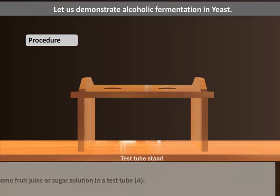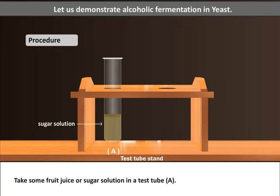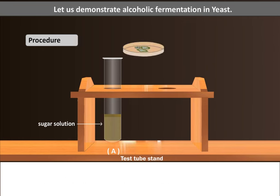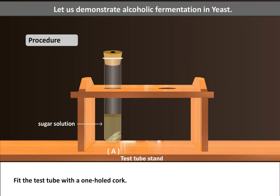Procedure: Take some fruit juice or sugar solution in a test tube. Add some yeast to this. Fit the test tube with a one-hole cork.